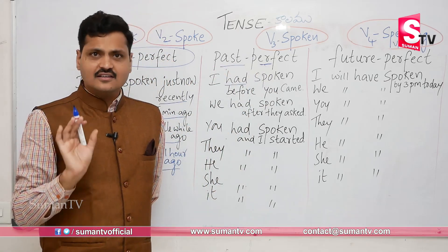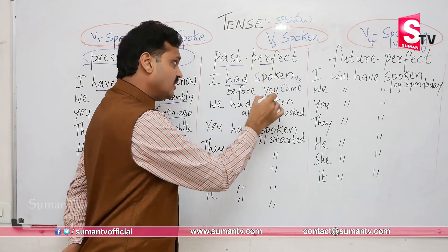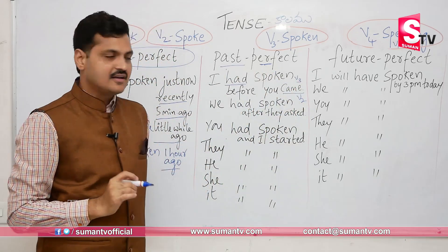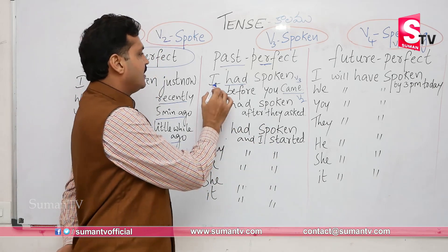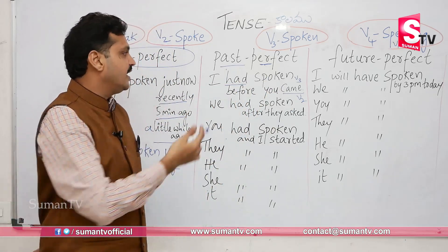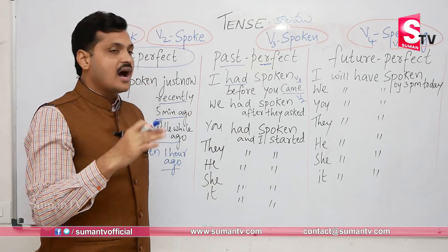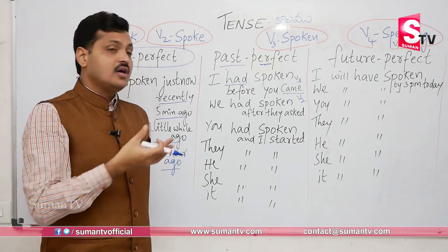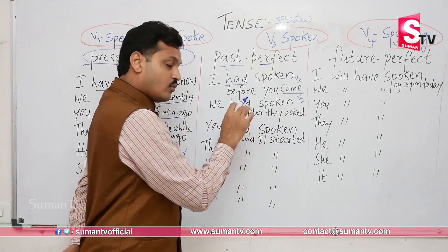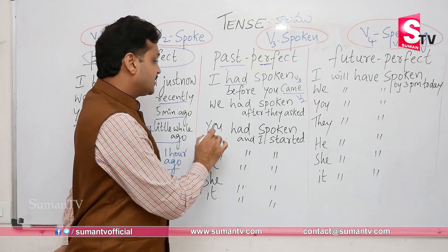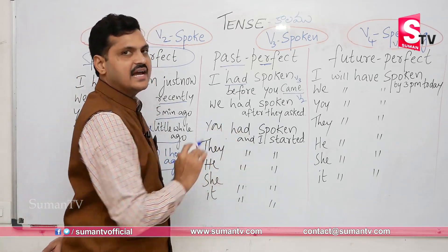In past perfect, we show the sequence of two past actions. Example: 'I had spoken before you came' — meaning I finished speaking before you arrived. Example: 'We had spoken after they asked' — we spoke after they asked. Example: 'You had spoken and I started' — two actions, both completed in the past.